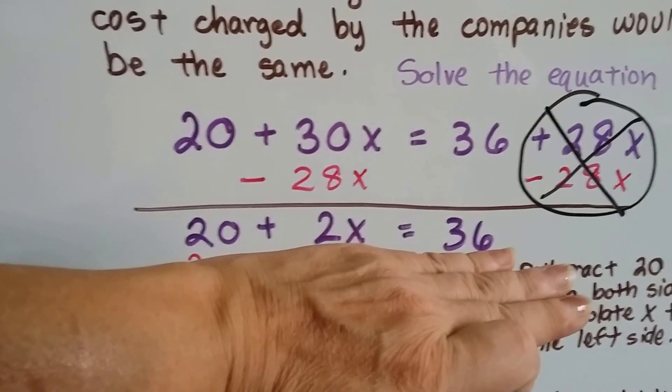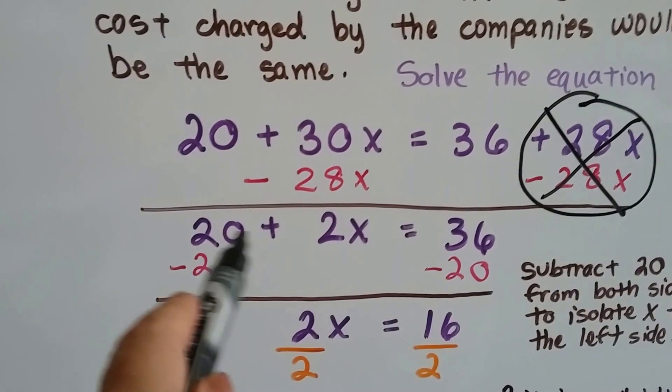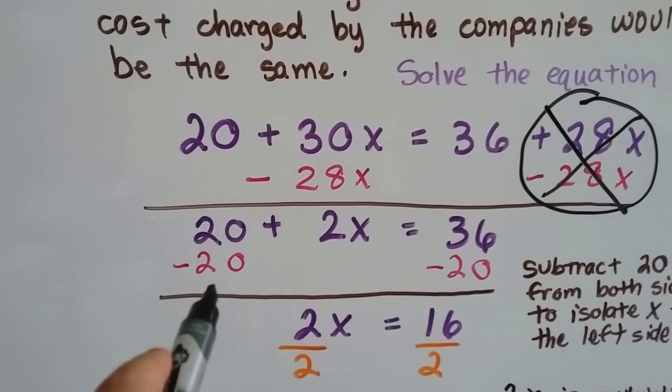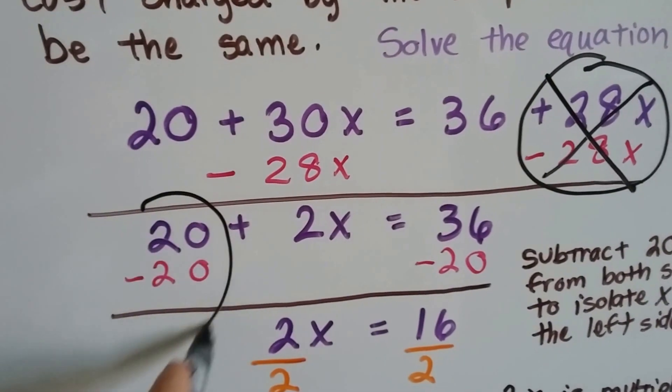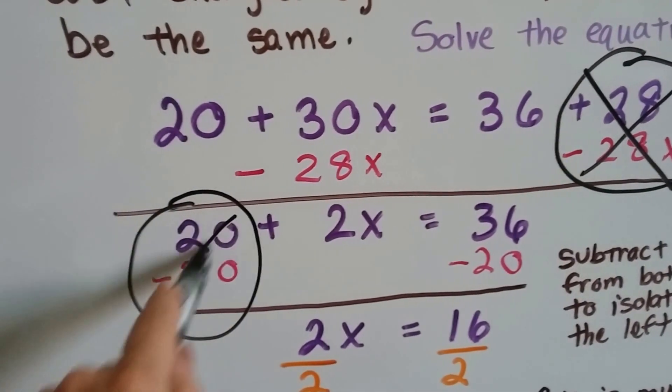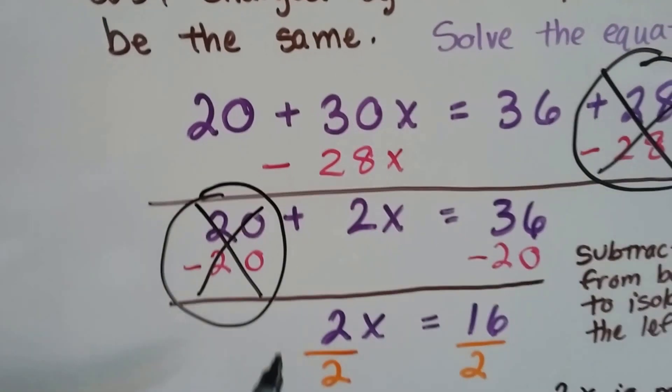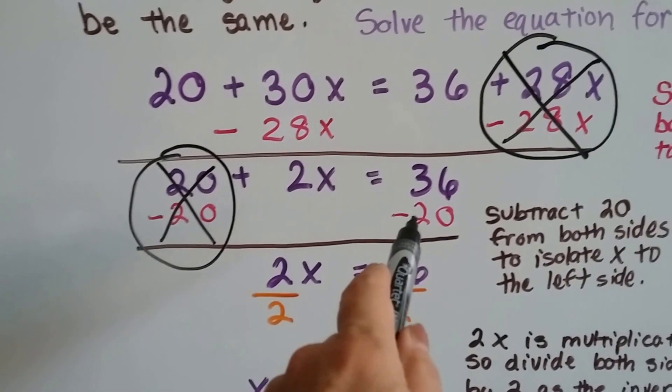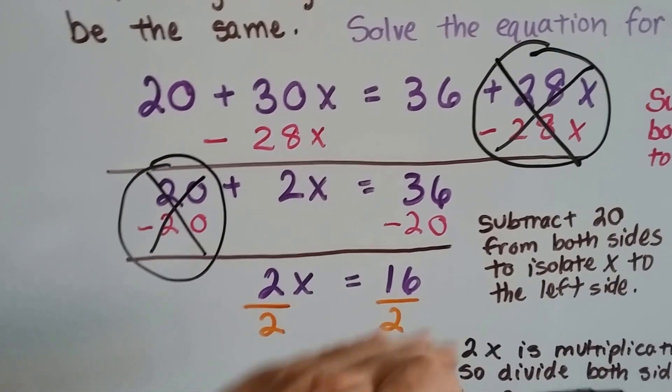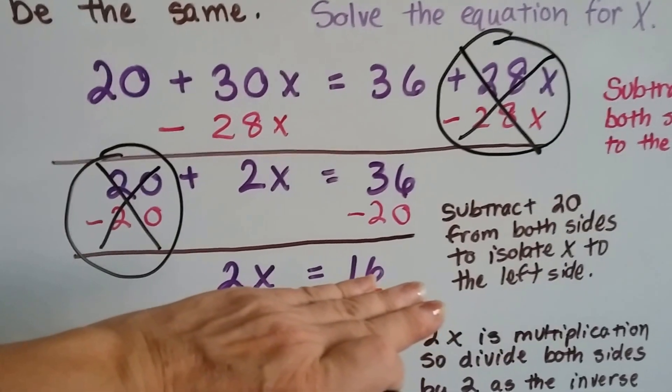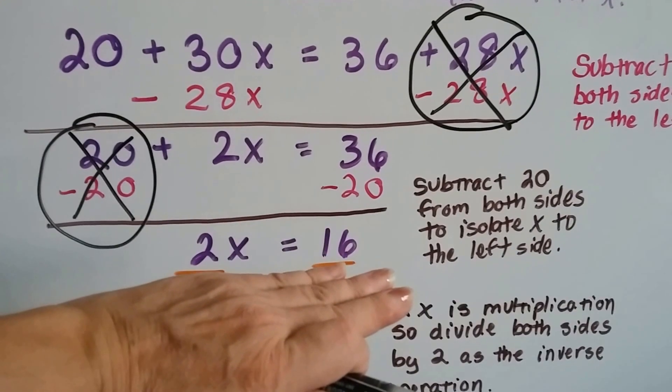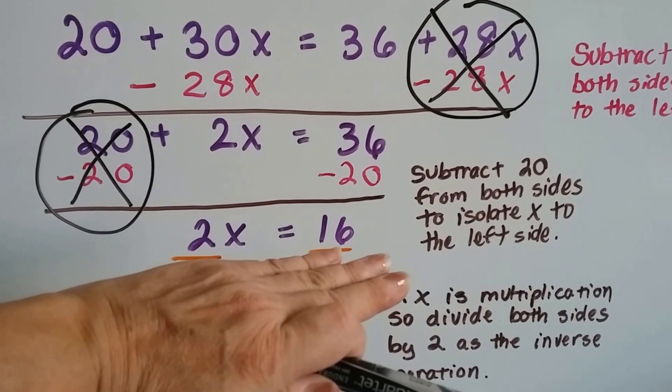Now we need to get the numbers to one side. Because this is a positive 20, we can take away 20 from both sides. This will create a zero pair of the positive 20 take away 20, and that cancels out. And then 36 take away 20 is going to leave 16, and we've got 2x equals 16. We subtracted 20 from both sides, and we isolated x to one side, to the left side.